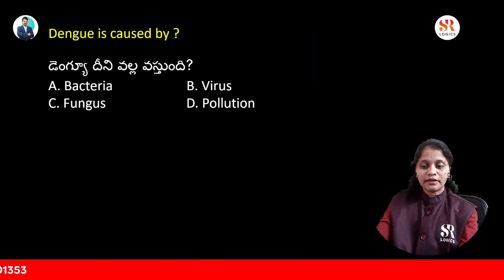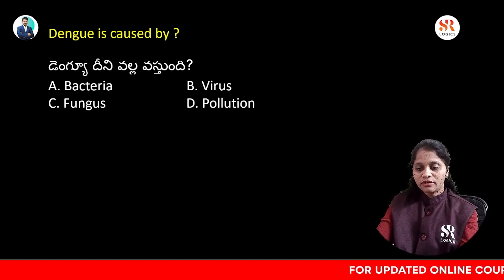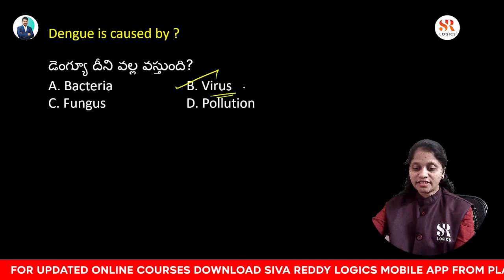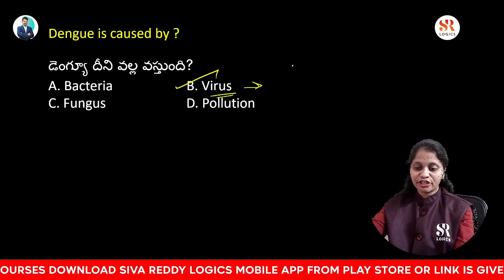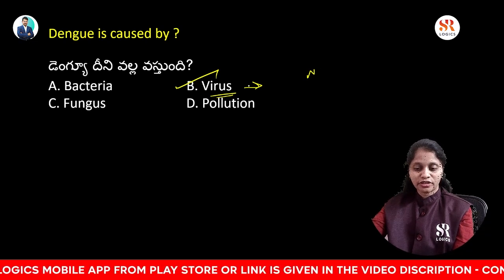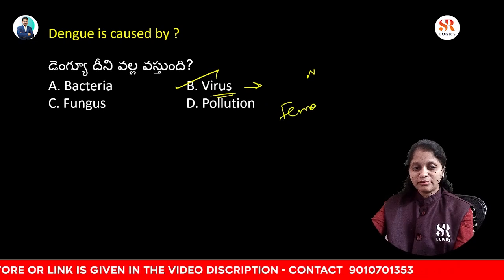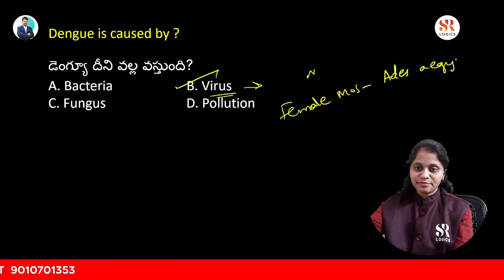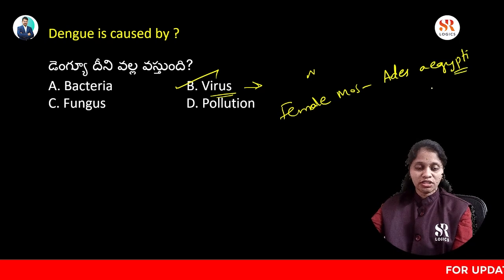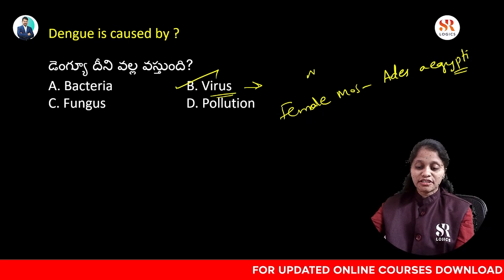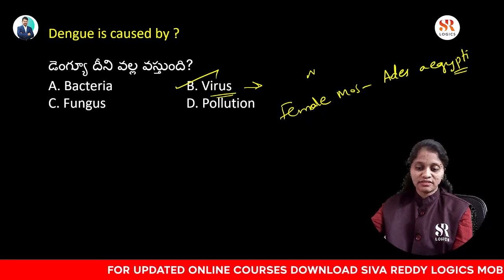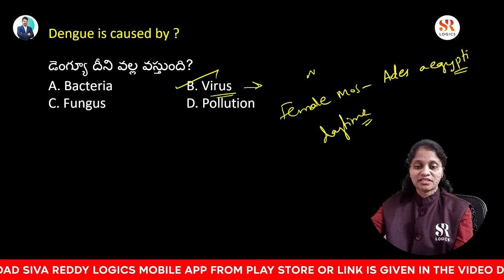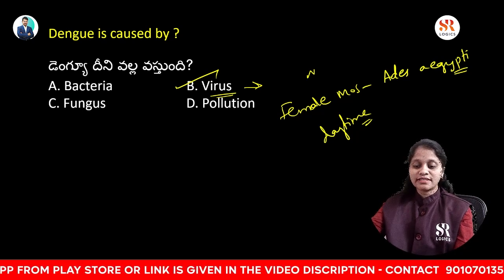Dengue is caused by bacteria, virus, fungus, or pollution? Dengue is a viral disease caused by the dengue virus. It is a mosquito-borne viral disease transmitted by female Aedes aegypti mosquitoes. These mosquitoes are found both inside and outside houses, generally active during the daytime.